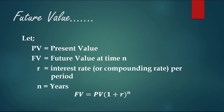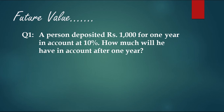The compounding factor increases the present value to the future value for the specified period. Let's take question number one: a person deposited rupees 1000 for one year in an account at a rate of 10%. How much will he have in the account after one year? The 10% rate is offered by the bank against the deposit.